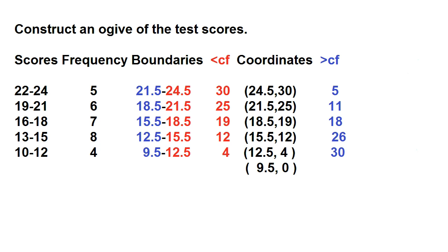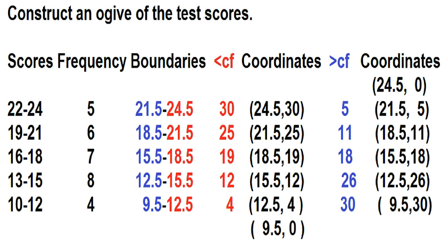Now let's pair these values to the class boundaries to find the coordinates for the more than ojive. How many students got scores greater than 24.5? The answer is 0. How many students got scores greater than 21.5? The answer is 5.